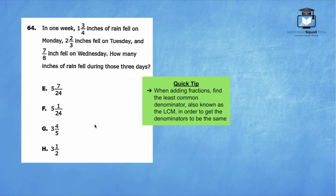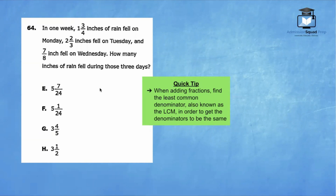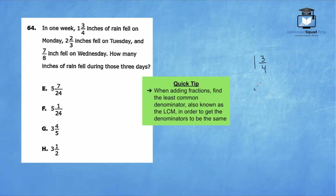For question number 64, it says: in one week, one and three-fourths inches of rain fell on Monday, two and two-thirds inches of rain fell on Tuesday, and seven-eighths inches fell on Wednesday. How many inches of rain fell during those three days? We need to add up the amount of rain in all three days: one and three-fourths plus two and two-thirds plus seven-eighths.